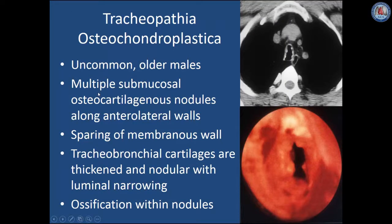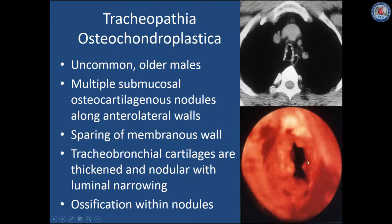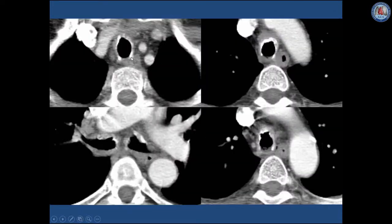Tracheopathia osteochondroplastica is an uncommon disorder seen in older males in which there are multiple submucosal osteocartilaginous nodules that form along the anterior and lateral walls of the trachea, also sparing the membranous wall. Tracheobronchial cartilages are thickened and become nodular, causing luminal narrowing, and ossification can form within the nodules. On the axial image, notice the nodularity and thickening of the anterior and lateral walls with ossification, and the correlative bronchoscopic image demonstrates these nodular submucosal deposits protruding into the airway. In a different patient, ossification within nodular areas of thickening is again seen in the cartilaginous portions of the tracheal and bronchial walls.